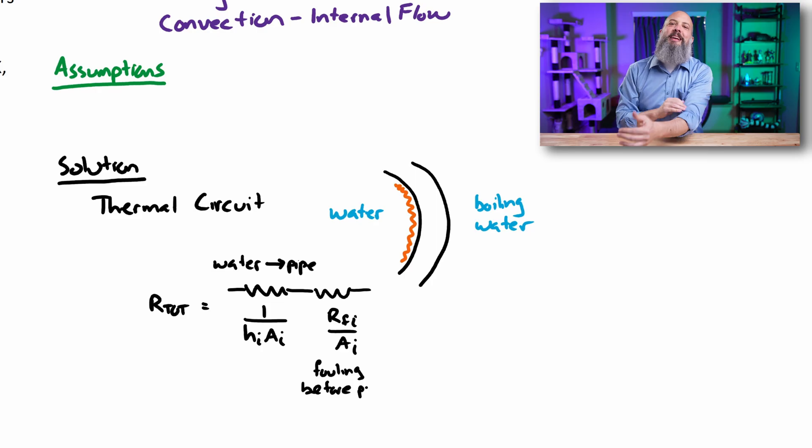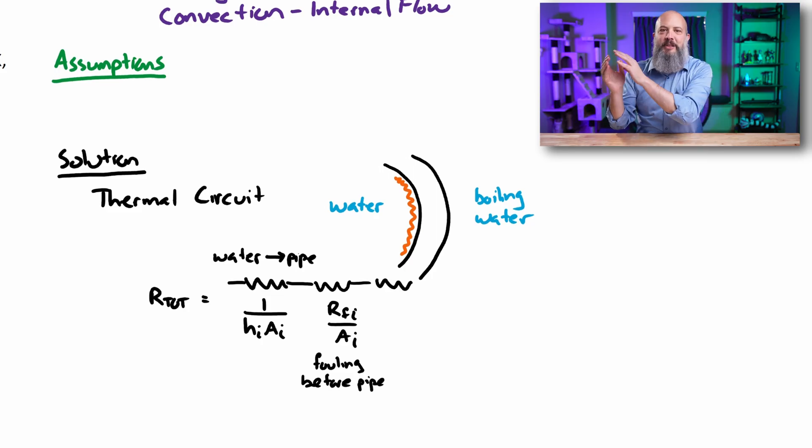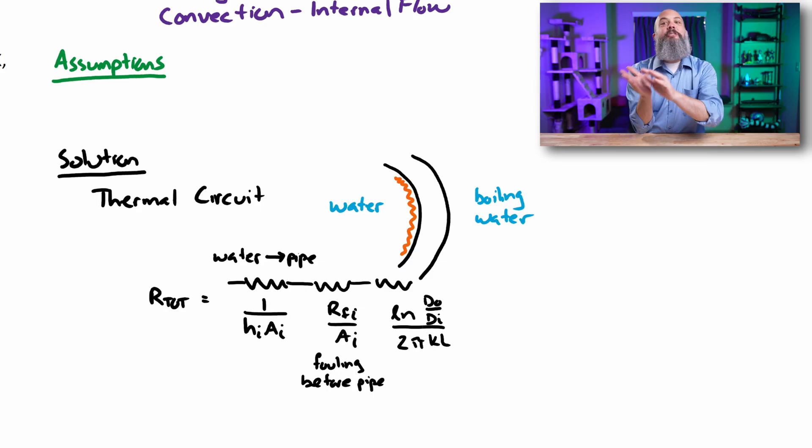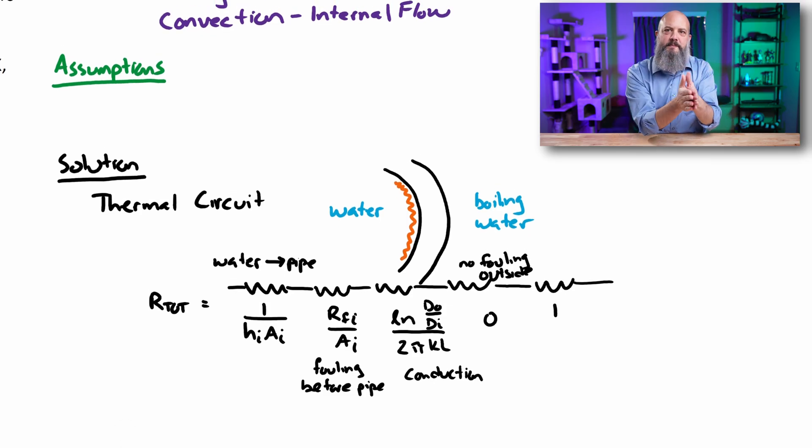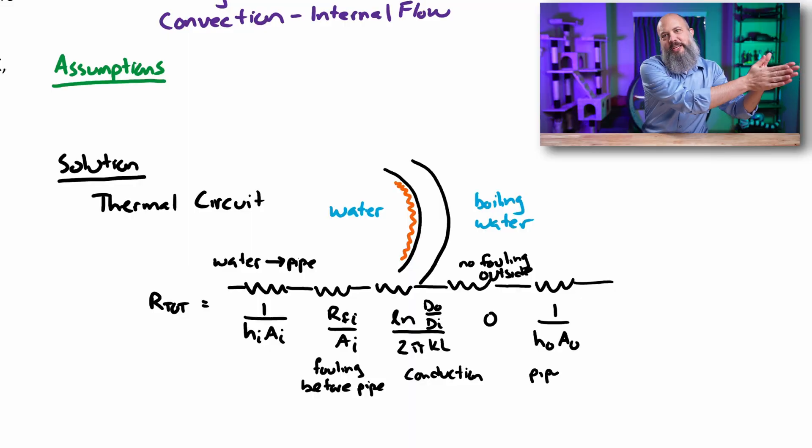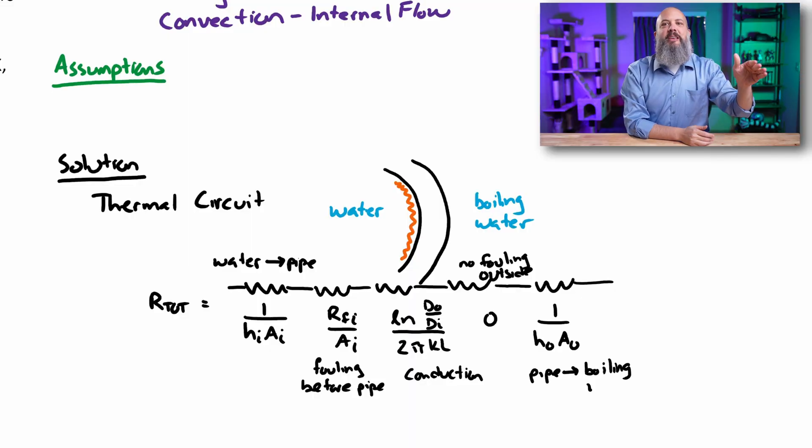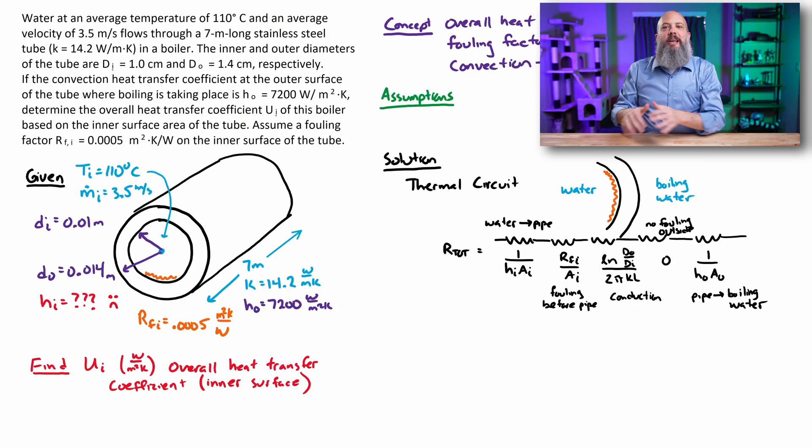On the inside of the pipe here, we've got convection, 1 over H·A. From the liquid inside the pipe to the fouling. It doesn't actually touch the surface of the pipe. It touches the fouling first. Then we've got R over A as the resistance through the fouling. Then we've got this natural log of the diameters. This is the conduction through the pipe itself. We would have another fouling term, except for this problem, we're saying there's no fouling on the outside. But then we do still have convection, 1 over H·A, convection to the boiling water that's outside the pipe.